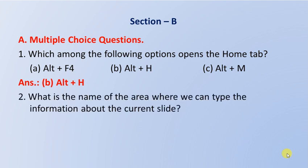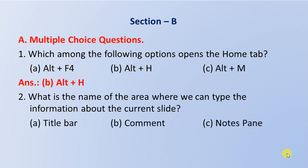Next question: What is the name of the area where we can type information about the current slide? Option A: Title bar, Option B: Comment, Option C: Notes pane. The right answer is Option C: Notes pane.